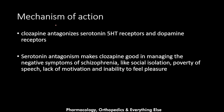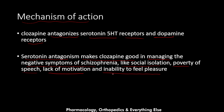Now let's talk about the mechanism of action of clozapine. It antagonizes serotonin 5-HT receptors and dopamine receptors. Serotonin antagonism makes clozapine effective in managing the negative symptoms of schizophrenia, such as social isolation, poverty of speech, lack of motivation, and inability to feel pleasure. Inhibition of serotonin leads to relief of these negative symptoms.